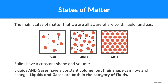So before we talk about fluids, let's talk about states of matter. The main states of matter that we are all aware of are solid, liquids, and gases. Of course there's plasma, but let's just take it to the basics. Solids have pretty much a constant shape and a constant volume. You can't really configure them so much — like a computer, the shape and volume stays the same.